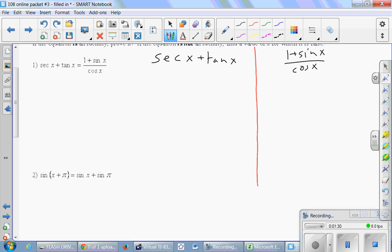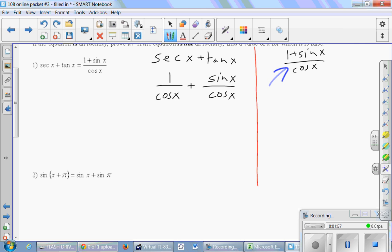So secant plus tan versus 1 plus sine x over cosine x. I don't really know what to do. I guess I'm tempted to maybe change things to sine and cosine. I said I don't think that's the greatest technique, but let's try it. So secant is really 1 over cosine of x. Tangent is really sine over cosine of x.